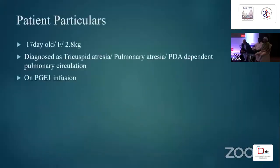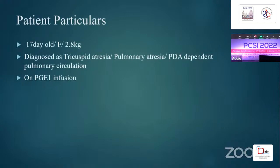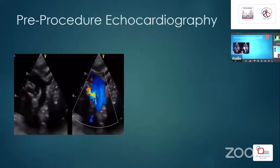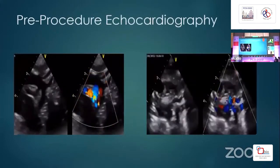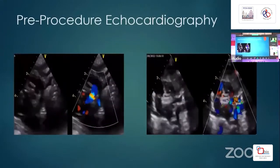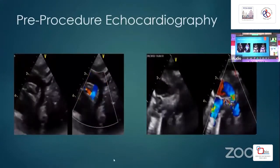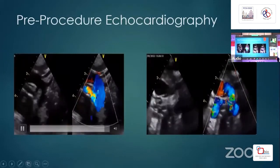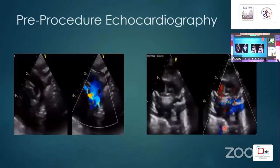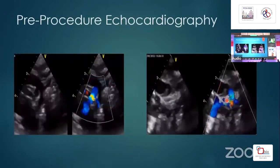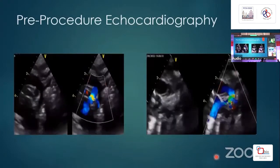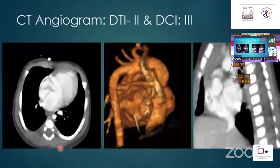This case is a 17-day-old girl, body weight 2.8 kg, diagnosed with tricuspid atresia with pulmonary atresia and duct-dependent pulmonary circulation. She was shifted to our hospital on prostaglandin infusion. On pre-procedure echocardiography, there is a vertical tortuous duct from the undersurface of the arch draining into the PA confluence, and there is moderate to severe RPA origin stenosis.